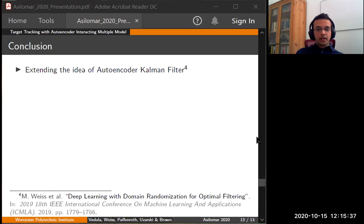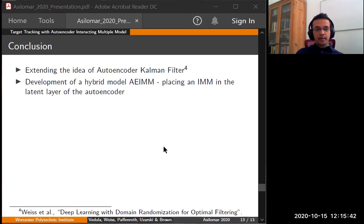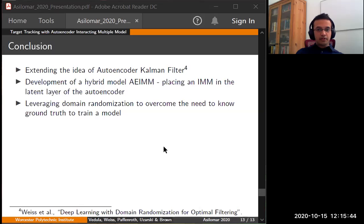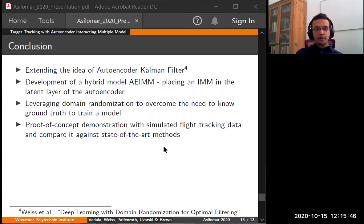Let's conclude. We extended the idea of AEKF and developed a hybrid model AEIMM. We leveraged domain randomization for this purpose and demonstrated a proof of concept using a simulated flight trajectory. While we use simulated flight paths to demonstrate here, it should also be noted that AEIMM is designed in a general manner to make it applicable for any application or scenario where IMM is appropriate. Thanks for listening to this talk and I hope you have a great day.